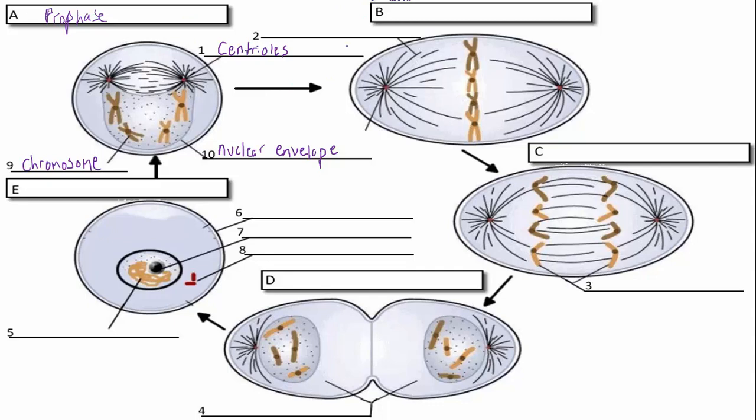After prophase comes the next part, which is metaphase. And even if I didn't have prophase before, there's a dead giveaway that we're in metaphase. And it's where these chromosomes are lined up. They're lined up right in the middle. And when they're lined up in the middle, I know that we're in metaphase.